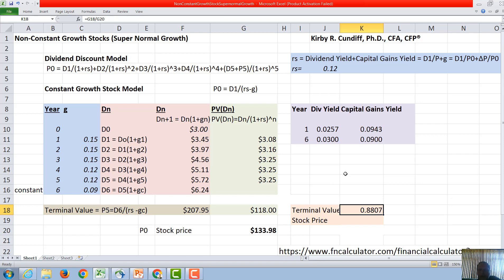It's also a good idea to look how the dividend yield and the capital gains yield behaves as a function of time. In year one our dividend yield, and we can see that rs is our dividend yield plus our capital gains yield. In year one that's just going to be dividend D1 over price P0. So if we look right here we have F11 and F11 right here is next year's dividend of 3.45 divided by our stock price in G20 right here. So we end up with 2.57 percent as the dividend yield initially.